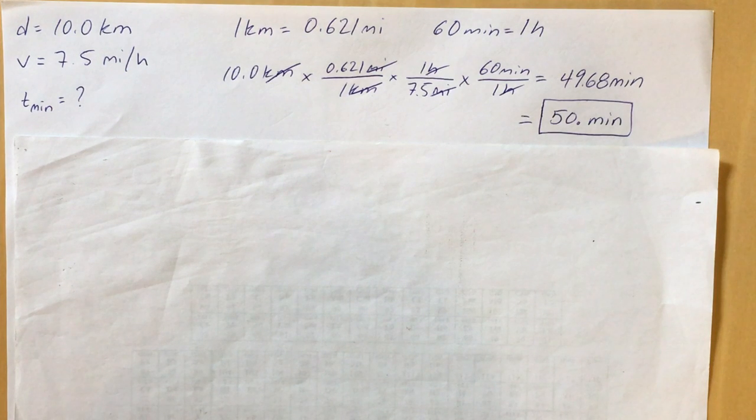And now you're left with hours as your units but you don't want hours, you want minutes. So you're going to use your last conversion factor, put in minutes on top and the hours in the bottom, and that cancels those out.